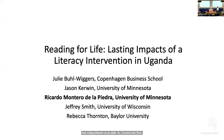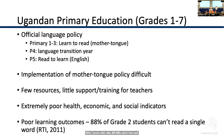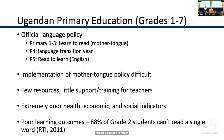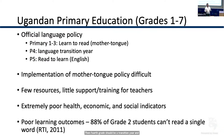I'm presenting a paper on the Northern Uganda Literacy Program, co-authored with Julie Buhl-Wiggers, Jason Kerwin, Jeffrey Smith, and Rebecca Thornton. A bit of context on the Ugandan primary education system: it comprises grades one through seven. Official policy is that grades one through three should focus on learning to read in the mother tongue. Uganda has around 40 different native languages in three language families. Grade four is a transition year, and from grade five students focus on reading in English.